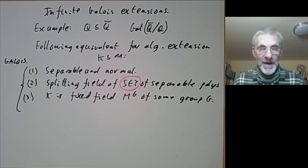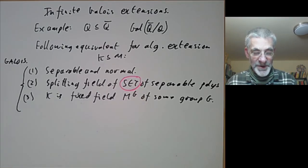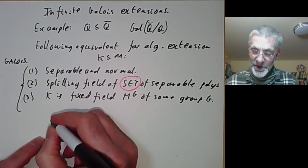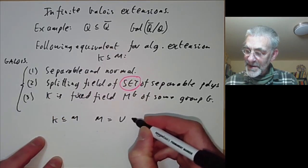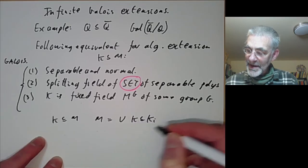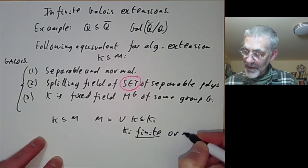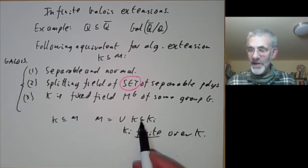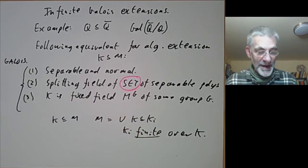Proving their equivalence is a very easy consequence of the proof for finite extensions. The key point is that if you have an algebraic extension K contained in M, then M is the union of extensions K contained in K_i where K_i is finite over K. So a lot of things can be reduced to the case of finite extensions, and in particular all these equivalences follow easily from the finite case.